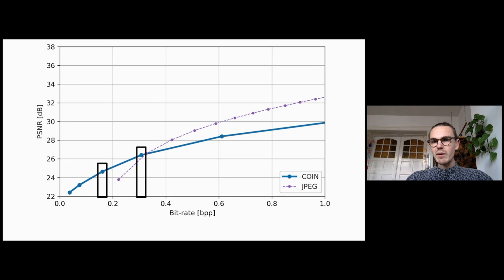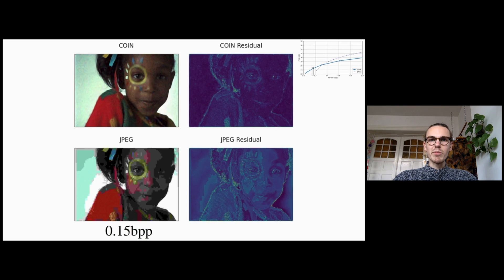We evaluate our approach on the common Kodak data. We found that at low bitrates, our approach outperforms JPEG despite not using any form of entropy coding. Let's have a closer look at the reconstruction quality of these two bitrates.